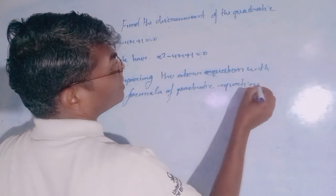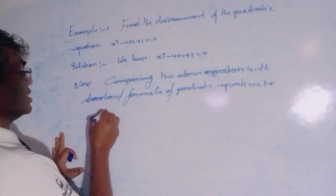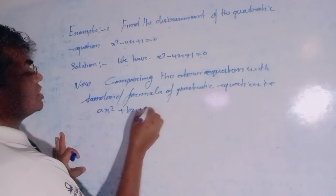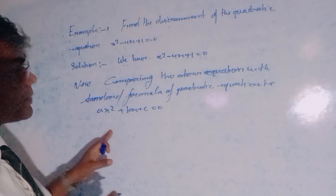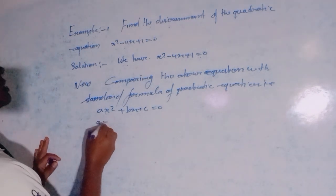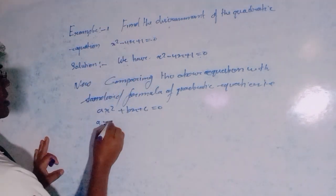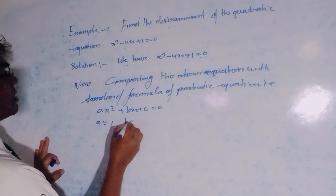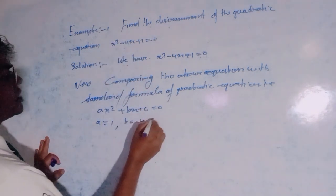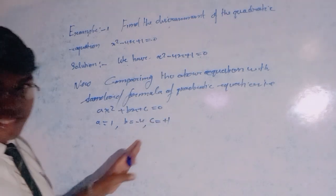Comparing with the standard quadratic equation a x squared plus b x plus c equals 0, we find: a is equal to 1, b is equal to minus 4, and c is equal to plus 1.